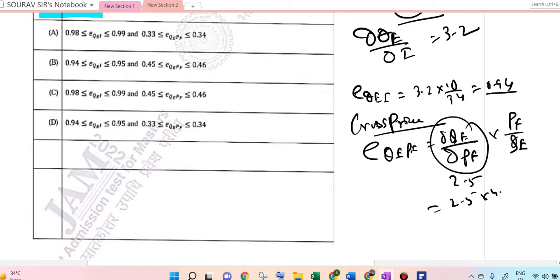∂QE/∂PF times PF by QE. So ∂QE/∂PF equals 2.5, so 2.5 times 4.5 divided by 34, which equals 0.33. Income elasticity is 0.94 and cross-price elasticity is 0.33. So D is the correct answer in this case.